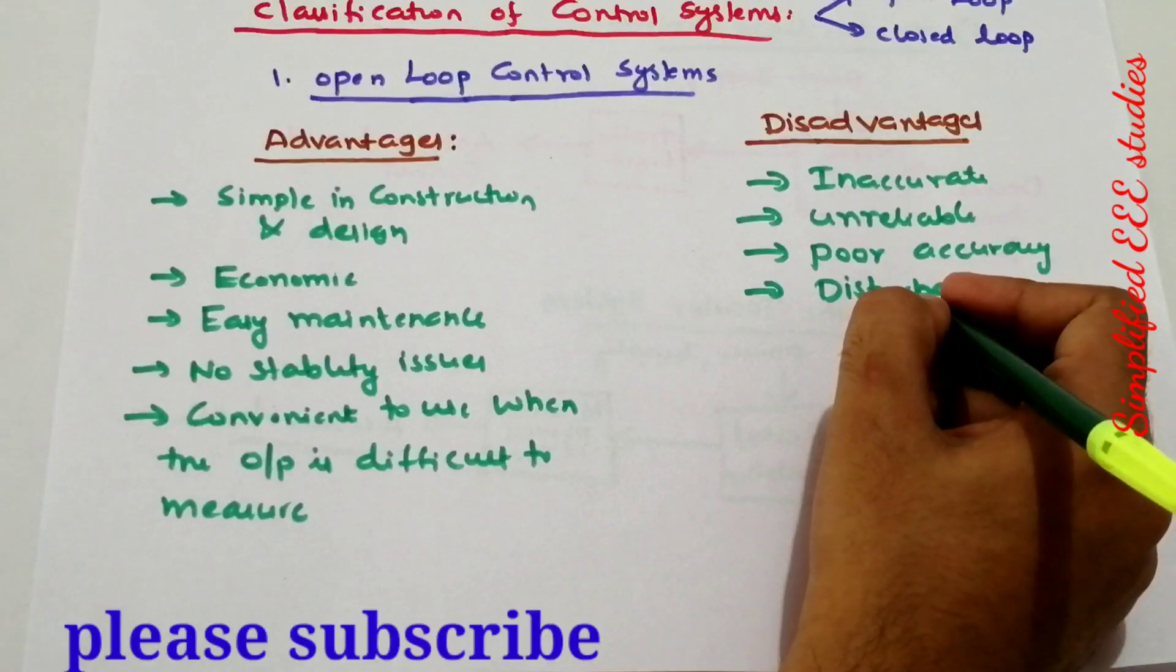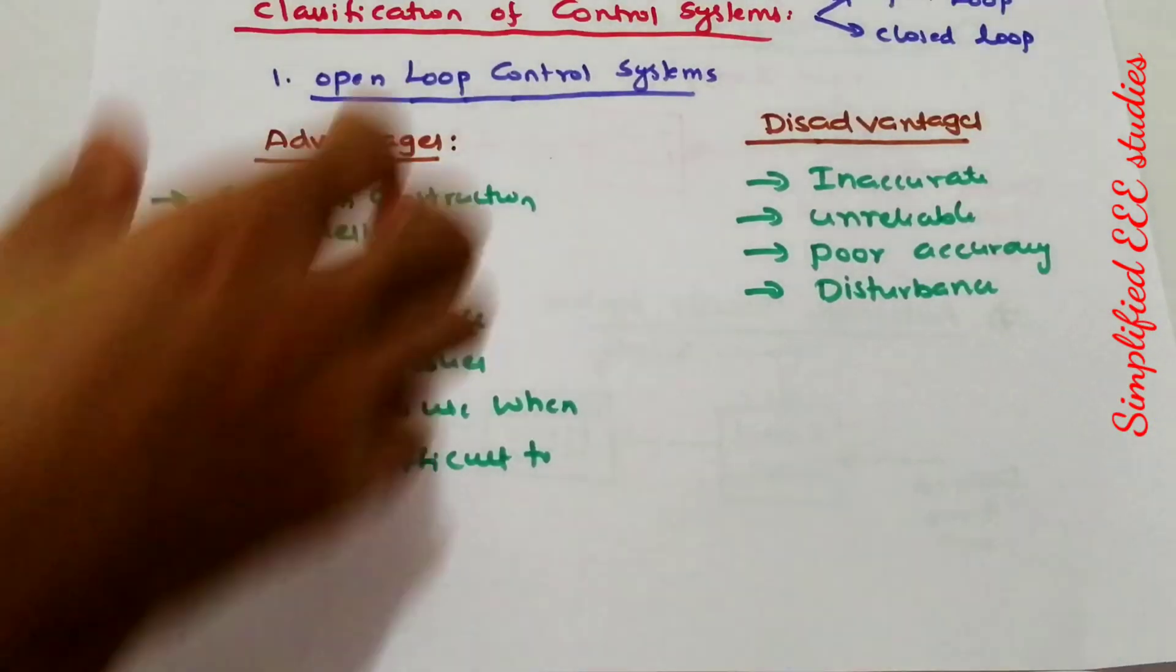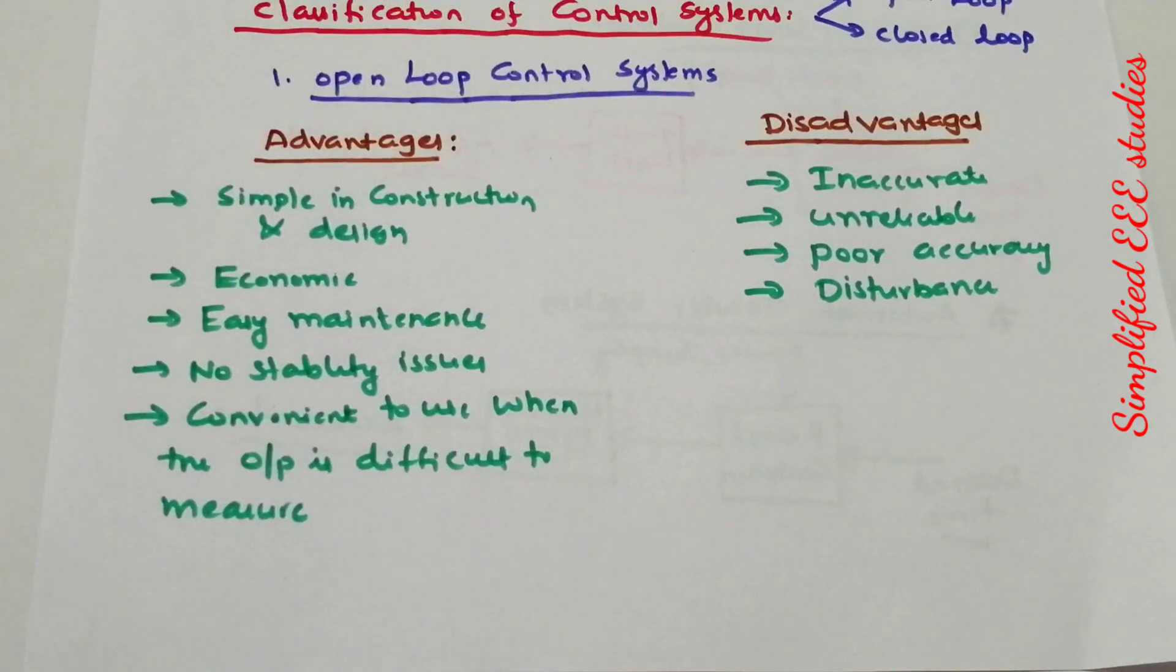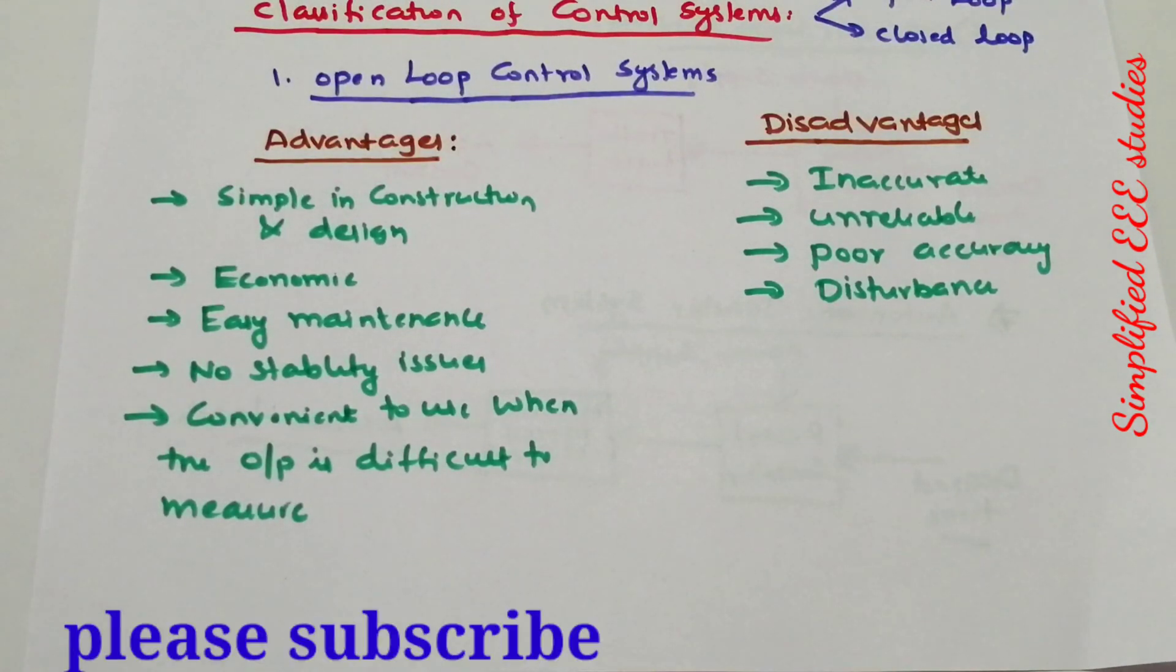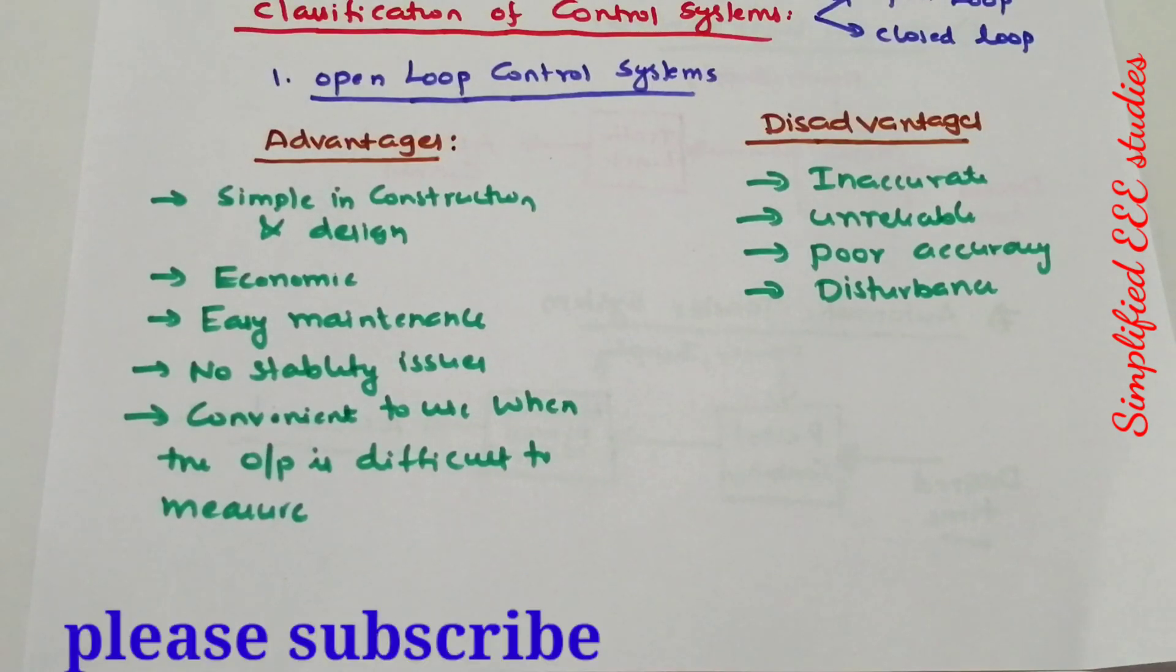These are the main disadvantages and advantages of open loop control systems. In the next session, I will discuss closed loop control systems in detail. Thanks for watching this video. Please share and don't forget to subscribe.